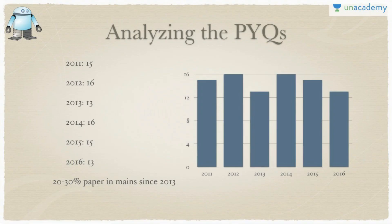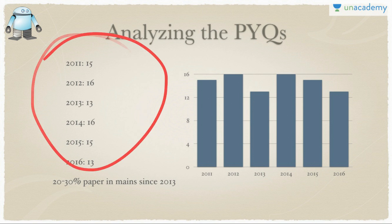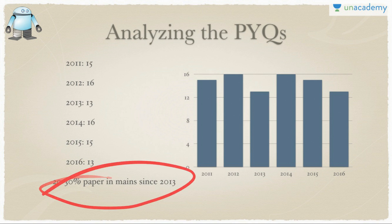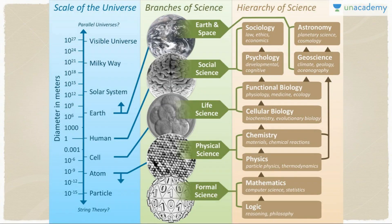Analyzing previous year question papers: in 2011, 15 questions; then 16, 13, 16, 15, 13 — on average, 15% of the prelims paper comes from science and technology. You can see this is one of the most consistent graphs you'll ever see. In mains, ever since 2013, 2014, 2015, 25 to 30% of the paper comes from science and technology. That is why you have to study it for marks.